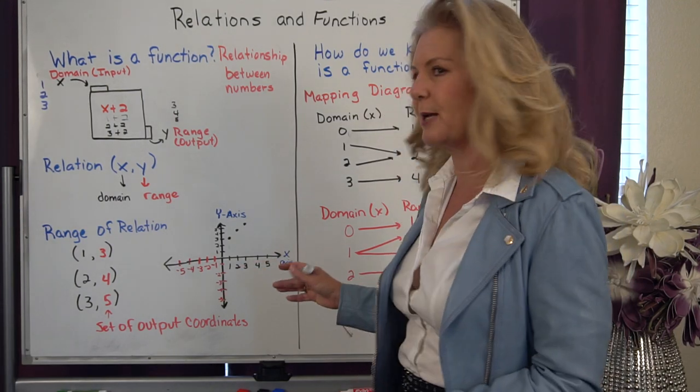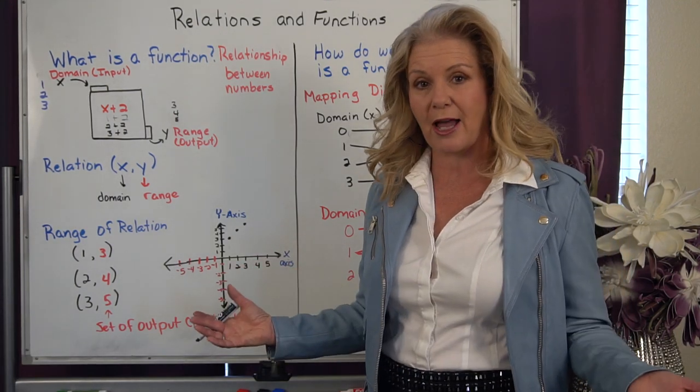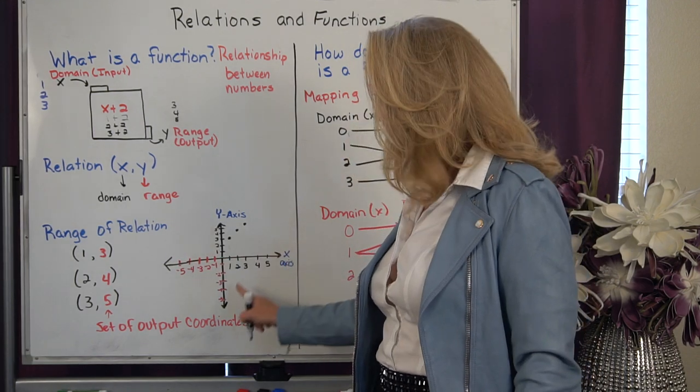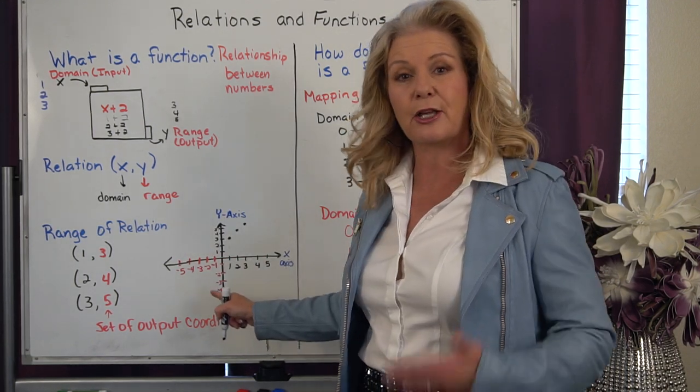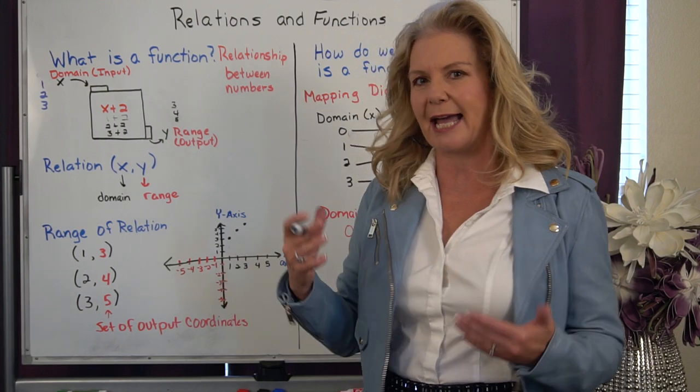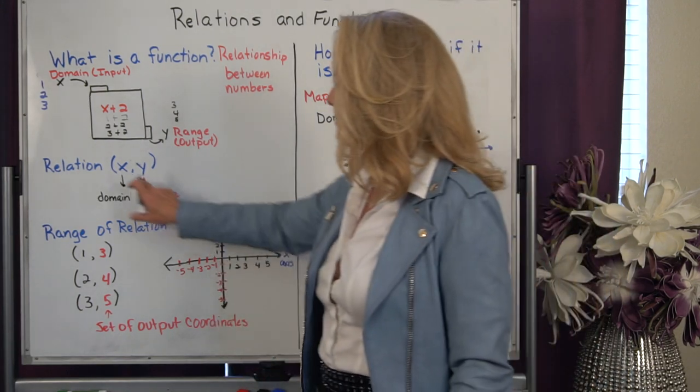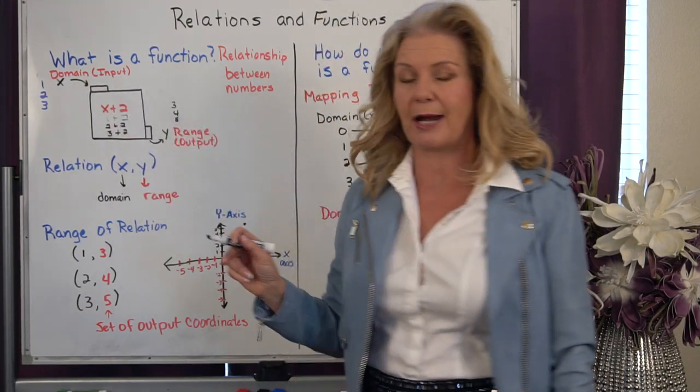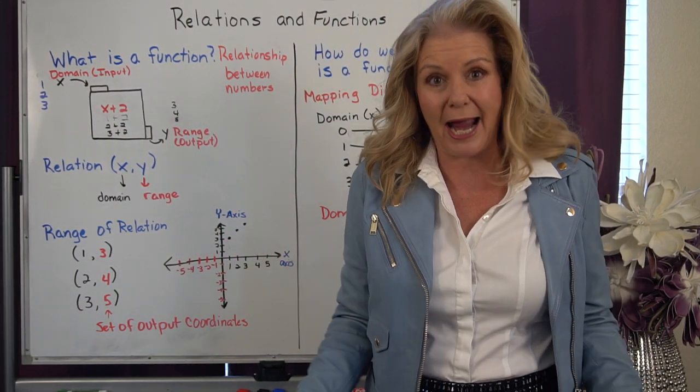So think about your coordinate plane. They're just two number lines. We have our x axis that goes horizontally. We have our y axis that goes vertically. And notice the x and the y match up with my x and my y for my domain and my range. So that means we can graph them.